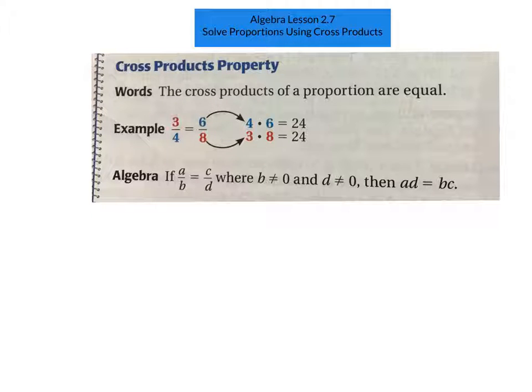So we're going to use cross products to solve proportions. We did this a little yesterday and it's just taking it to one more step. So you see here the cross products property. All that is telling you is that when you have proportions that are equal, the cross opposite sides, if you multiply them, they should equal each other. Does that make sense?